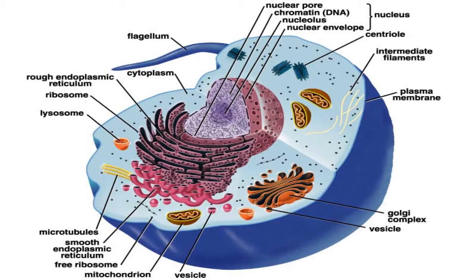Plasmodesmata are small tubes that connect plant cells to each other, providing living bridges between cells. Ribosomes: all living cells contain ribosomes, tiny organelles composed of approximately 60% RNA and 40% protein.